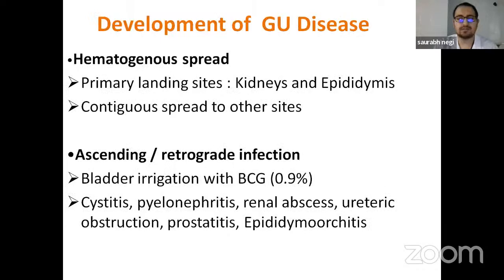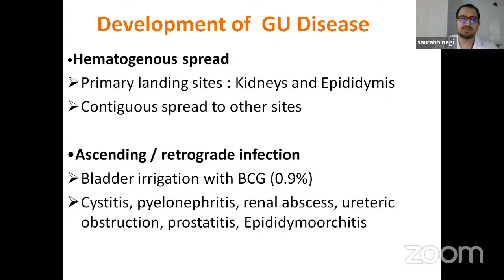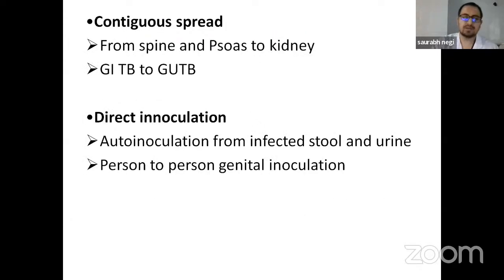Development of genitourinary disease is most commonly by hematogenous spread. The primary landing sites are the kidney and the epithelial tubules, from which contiguous spread occurs to other sites. It can also be due to ascending and retrograde infections. Bladder irrigation with BCG has an incidence of 0.9% and can present with cystitis, pyelonephritis, renal abscess, ureteric obstruction, prostatitis, and epididymo-orchitis. There may also be contiguous spread from the spine, psoas, and GI tract, and direct inoculation from infected stool, urine, and person-to-person genital inoculation.